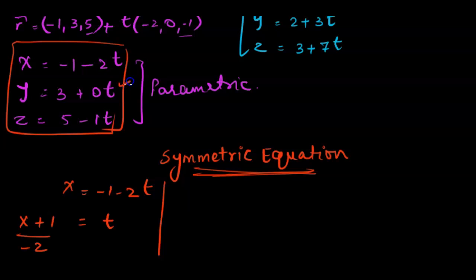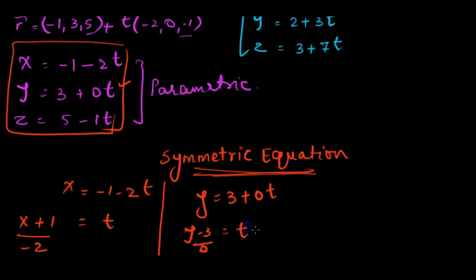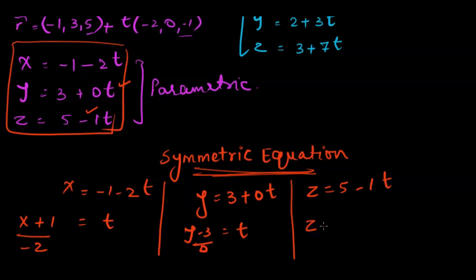Then we use the y part of the parametric equation: y equals 3 plus 0t. That gives us y minus 3 over 0 equals t. Then we take the z part: z equals 5 minus 1t. When we isolate for t, we get z minus 5 divided by negative 1 equals t.